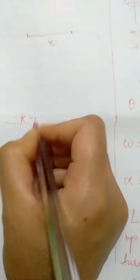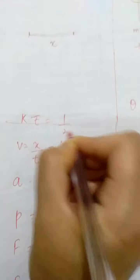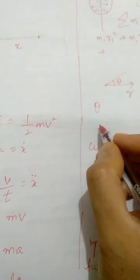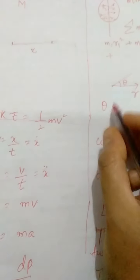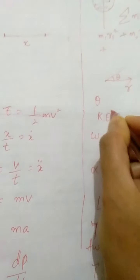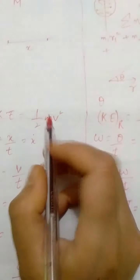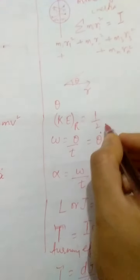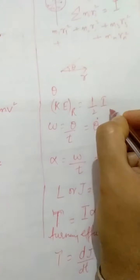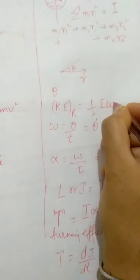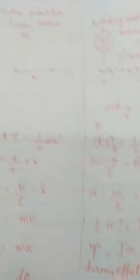Similarly, kinetic energy in linear motion is defined as half of mv squared. But in case of rotary motion, the kinetic energy of rotation is defined as half of I omega squared — replacing m with the moment of inertia I and velocity v with angular velocity omega.